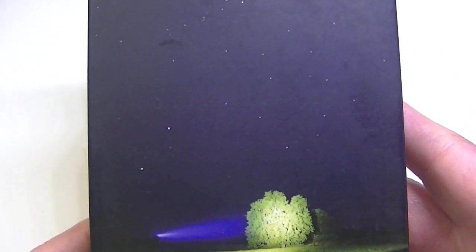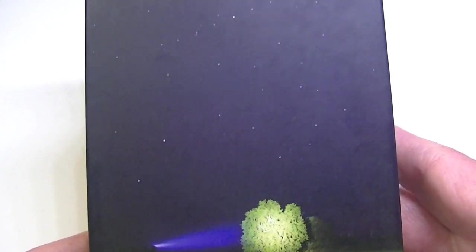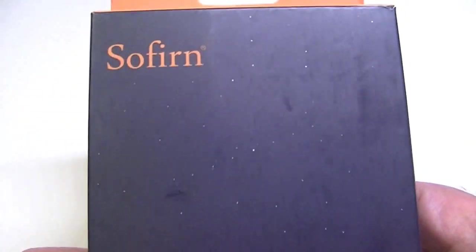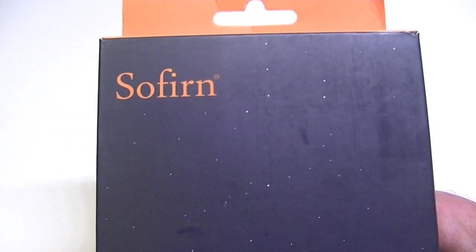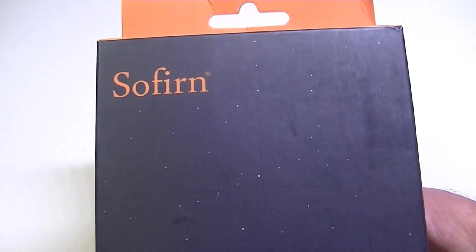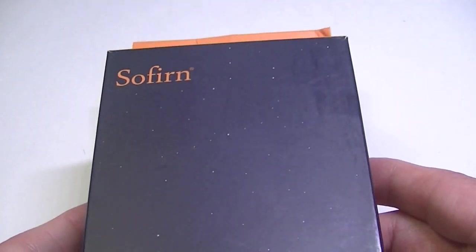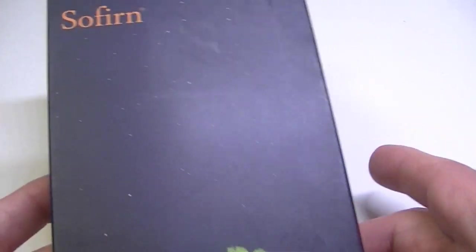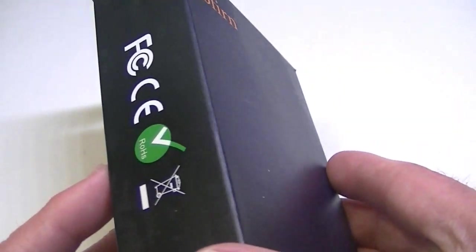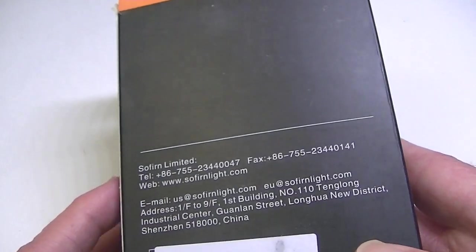But this is the updated version of the SC31, the Pro. To look at this box you wouldn't know that, since Sofern is pretty big on generic boxes. They never say anything on their box about what the light is inside. They have changed the design of their generic box, but other than that you wouldn't really know too much.